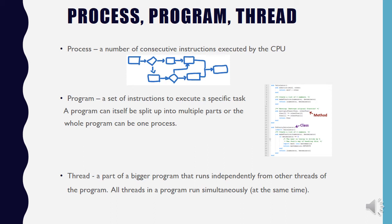A few definitions before we continue: a process is a number of consecutive instructions executed by the CPU. A program is a whole set of instructions that executes a specific task — it's more than a process. A process fits within a program, and a program can be split into many processes, or the whole program could be one process. A thread is part of a bigger program that runs independently from other threads, so the different threads in a program run at the same time.